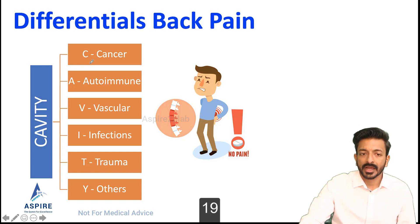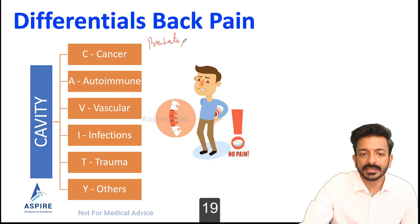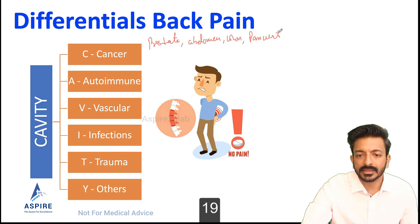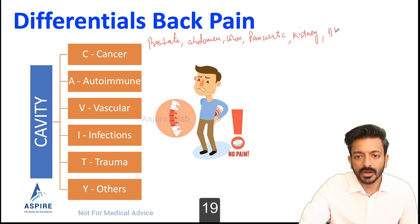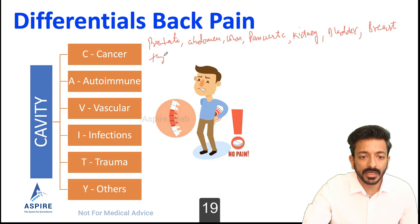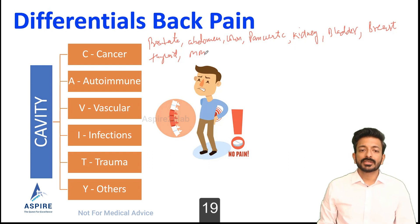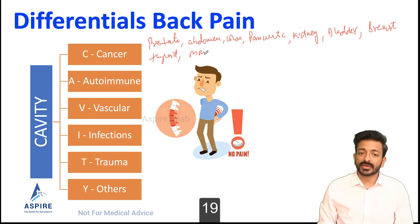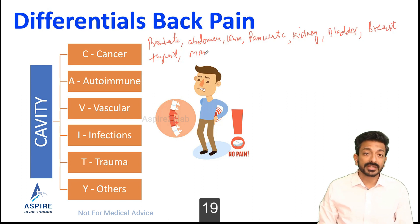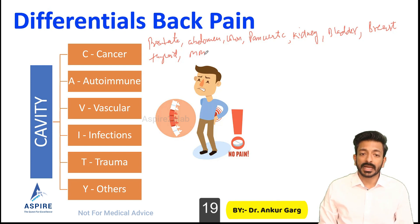Any cancer can spread to the back. For example, in a male patient we consider prostate cancer, colon cancer, pancreatic cancer. In a female patient, breast cancer is important. Kidney cancer, bladder cancer, thyroid cancer, and multiple myeloma — your blood cancer — can all present with back pain. We have to ask generalized cancer signs and symptoms, because this might be a cancer anywhere in the body that has metastasized to the back.